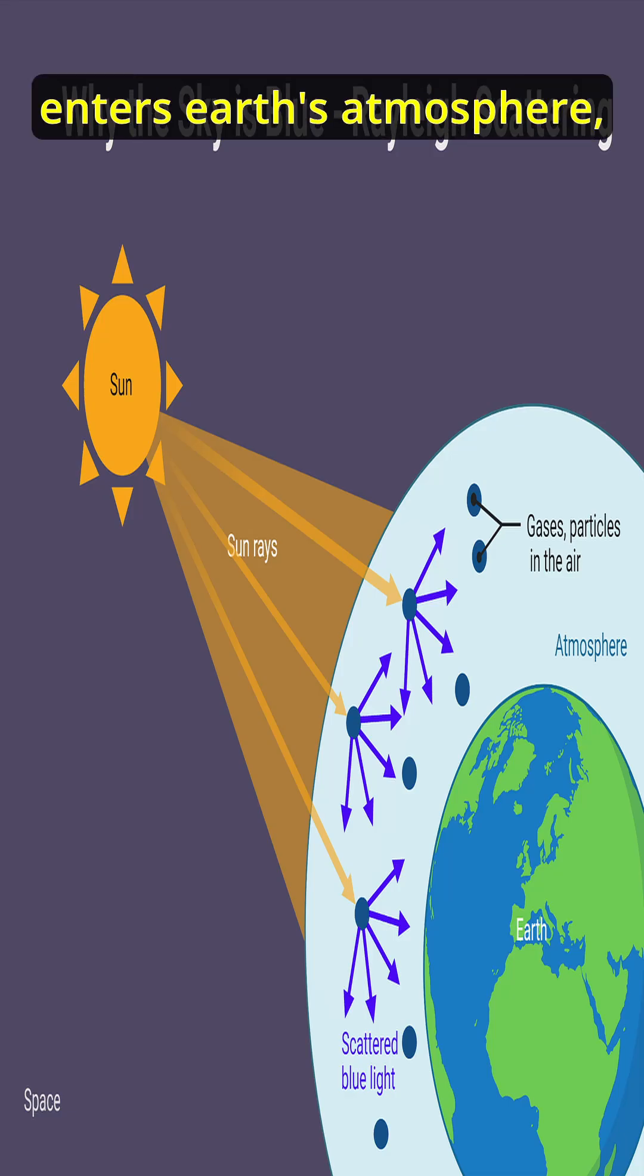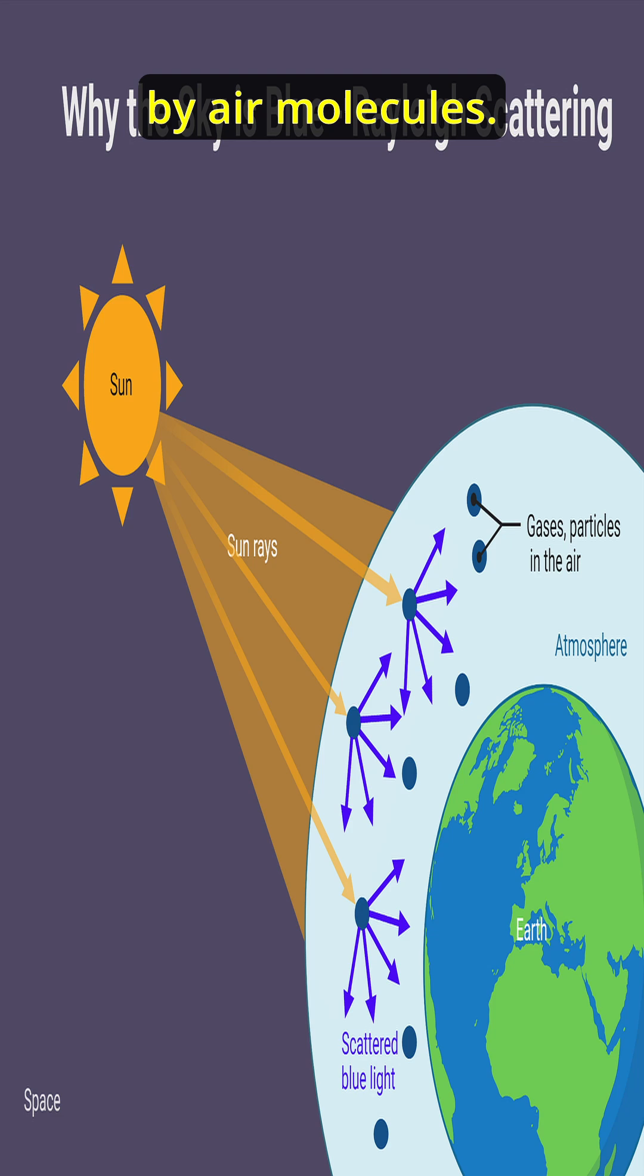Do you know why? The answer is because of Rayleigh scattering. When the sunlight enters earth's atmosphere, it gets scattered by air molecules.